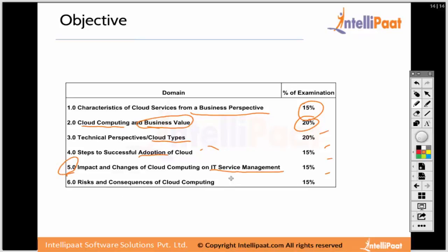Domain six: risks and consequences of cloud computing. Any change begets a risk. The success towards that change is proper risk management and mitigation. Identification of those risks is part of that mitigation and management procedure. We will look into that in domain six.